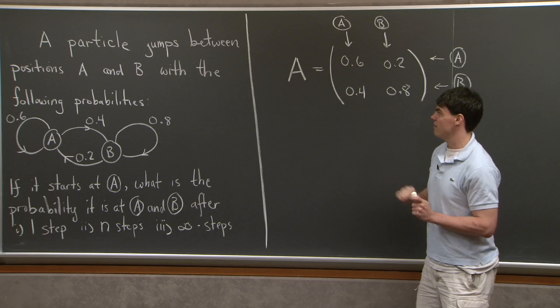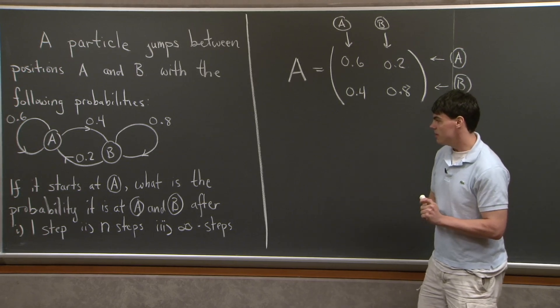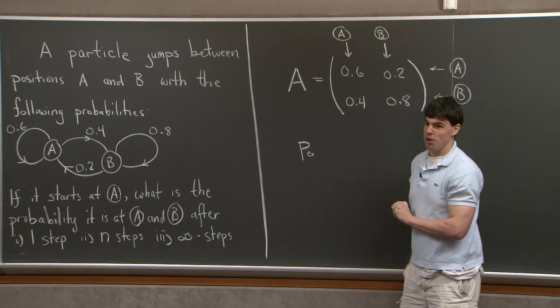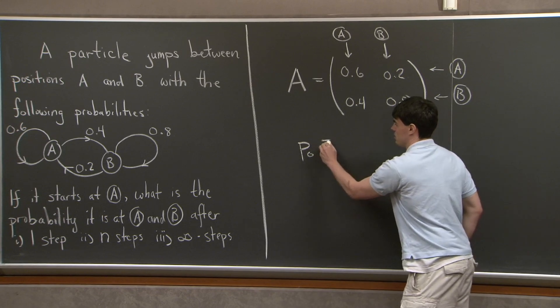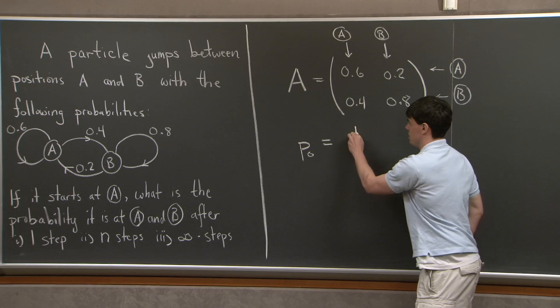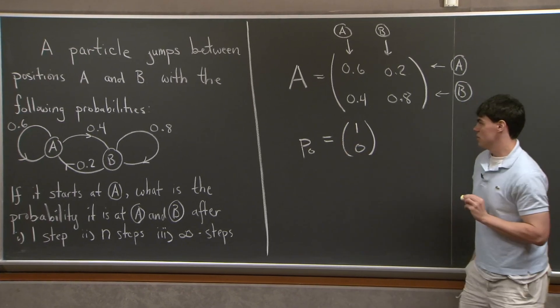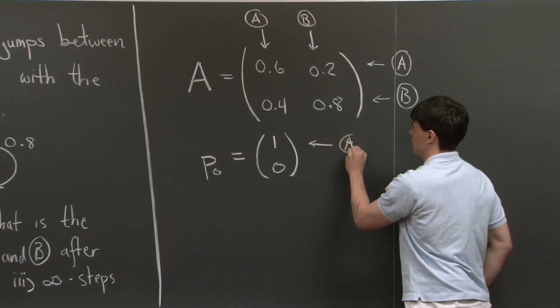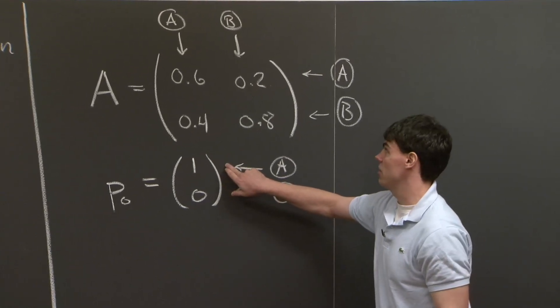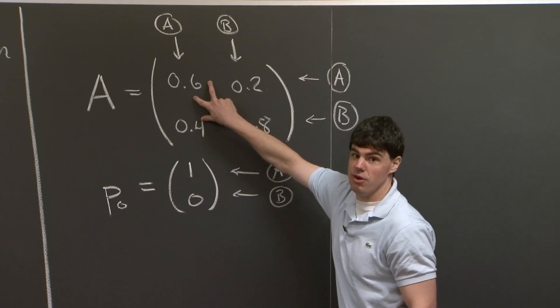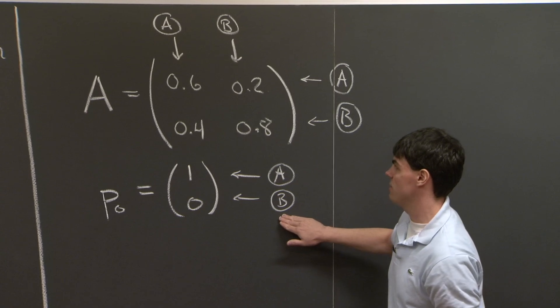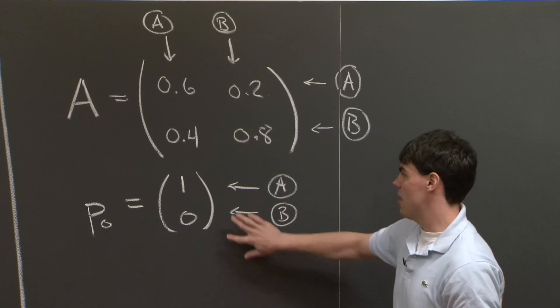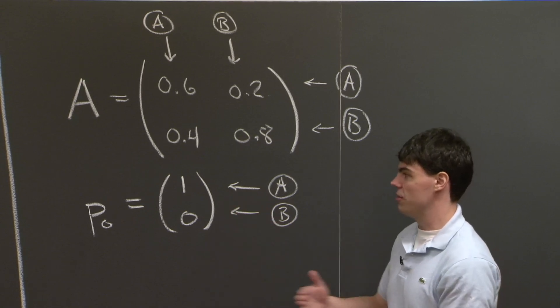OK. So now, once we've encoded this graph using this matrix A, we now want to tackle this problem. So I'm going to introduce the vector p. And I'm going to use a subscript 0 to denote the probability that the particle is at time 0. So we're told that the particle starts at position A. So at time 0, I'm going to use the vector 1, 0. Again, I'm going to match the top component of this vector with the top component of this matrix and the first column of this matrix. And then likewise, the second component of this vector with the second row and second column of this matrix. And we're interested in how does this probability evolve as the particle takes many steps.